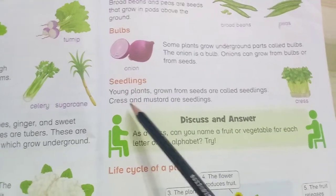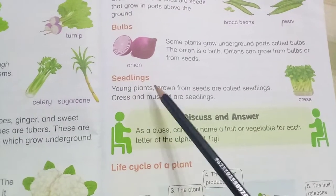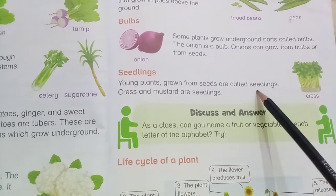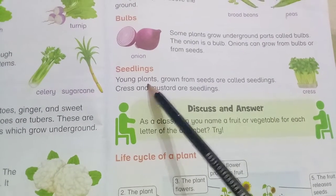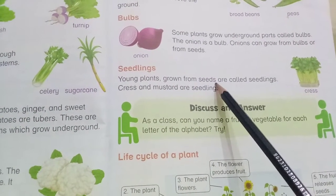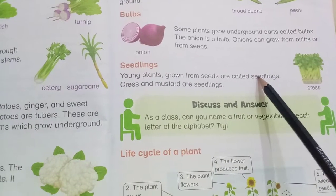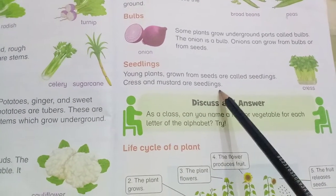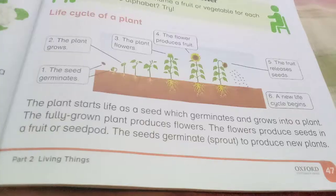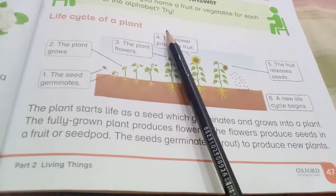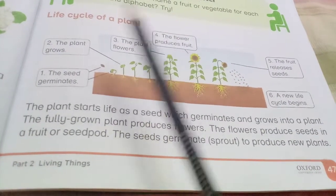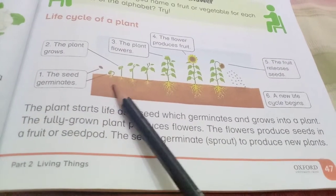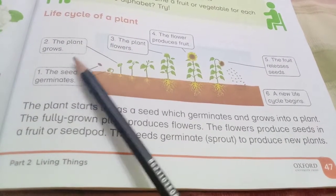Seedlings. Young plants grown from seeds are called seedlings. Cress and mustard are seedlings.